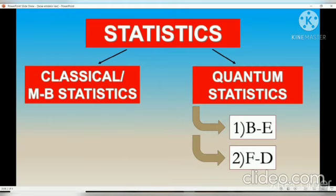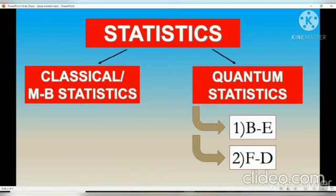Then where does the difference lie? The difference is that Fermi-Dirac statistics, the second category of quantum statistics, obeys the Pauli exclusion principle. According to the Pauli exclusion principle, no two particles can occupy a single level with all four quantum numbers the same. Whereas in Bose-Einstein statistics, the indistinguishable particles do not obey the Pauli exclusion principle.